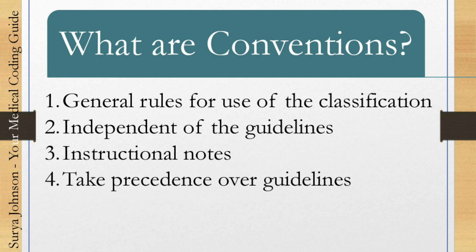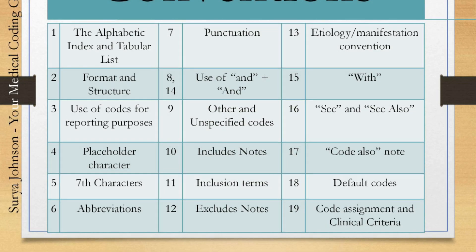Under Section 1A conventions, we have around 19 types. Number 1: alphabetic index and tabular list. Number 2: format and structure. Number 3: use of codes for reporting purposes. Number 4: placeholder character. Number 5: 7th character. Number 6: abbreviations. Number 7: punctuation. Numbers 8 and 14: use of AND. Number 9: other and unspecified codes. Number 10: includes notes. Number 11: inclusion terms. Number 12: excludes notes. Number 13: etiology or manifestation convention. Number 15: with. Number 16: see and see also. Number 17: code also note. Number 18: default codes. Number 19: code assignment and clinical criteria.